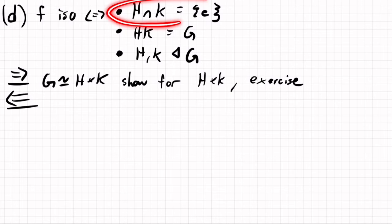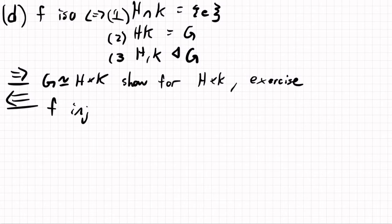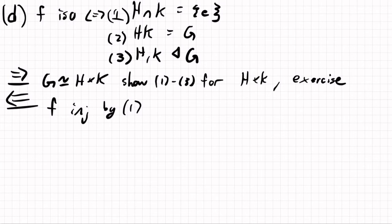So let's do the slightly harder direction. So by part a, this is what it means to be injective. So f is injective. Maybe I should name these conditions. I'll call them one, two, and three. So f is injective by one, and f is surjective by two. Okay.